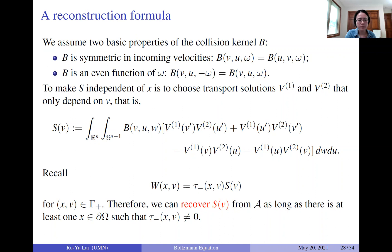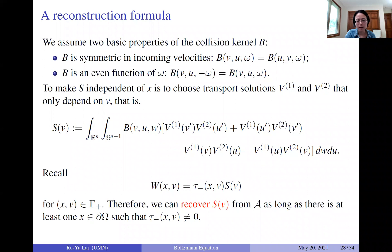Since B only depends on three velocities and is independent of x, we consider the source term as depending only on velocity as well. To ensure S is independent of x, we choose transport solutions v_1 and v_2 that depend only on velocity, not on position x. With this choice, the line integral for w simplifies: because S is independent of x, the integral equals the exit time multiplied by the source. Assuming we know the exit time at every direction v, we can determine the source at every v from the boundary measurement map A.